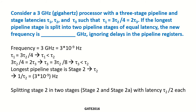Consider a 3 GHz processor with a 3-stage pipeline and stage latencies τ1, τ2, and τ3, such that τ1 = 3τ2/4 = 2τ3. If the longest pipeline stage is split into 2 pipeline stages of equal latencies, what is the new frequency? Ignore delays in the pipeline registers.